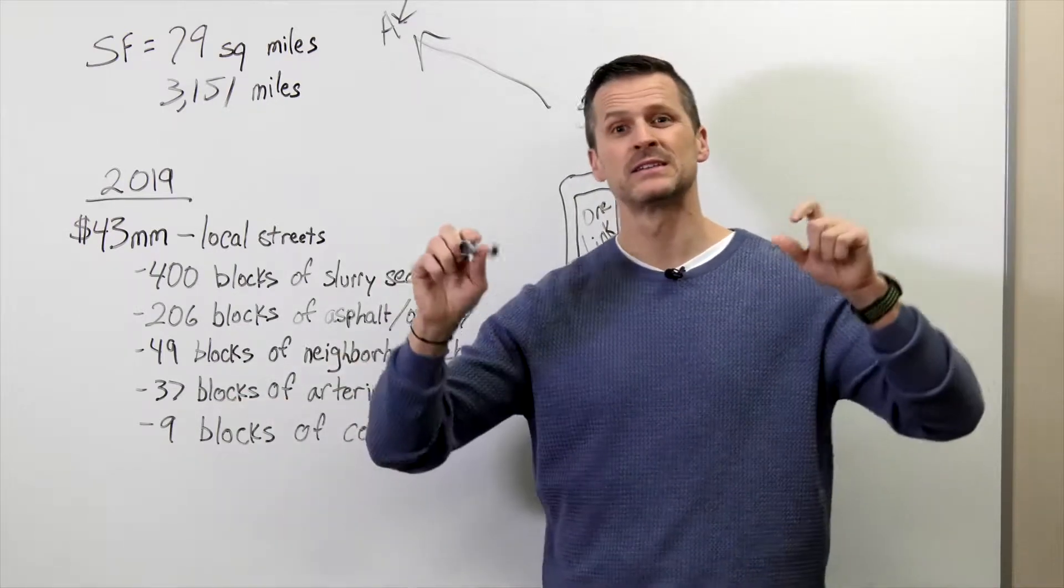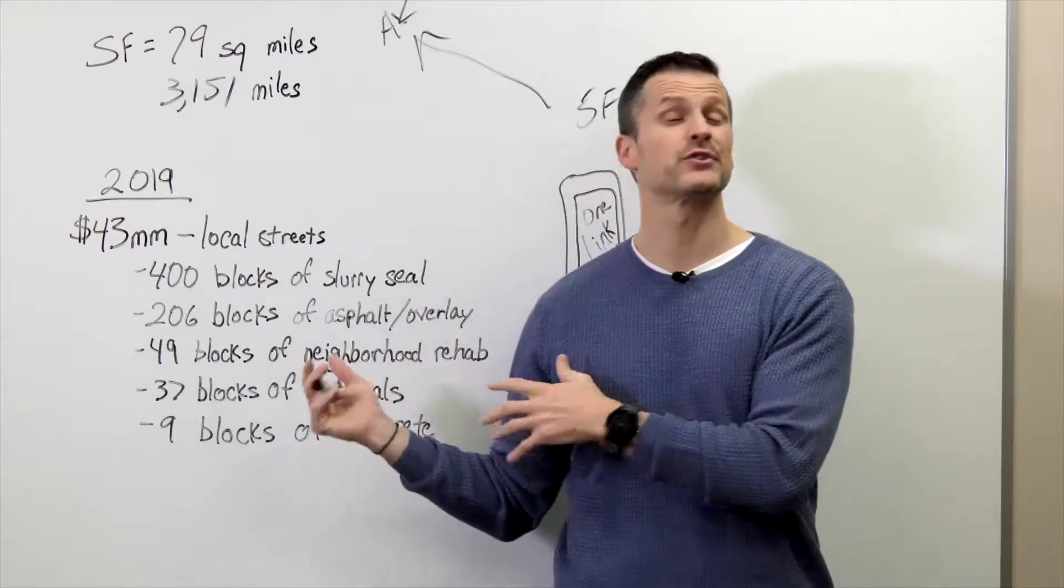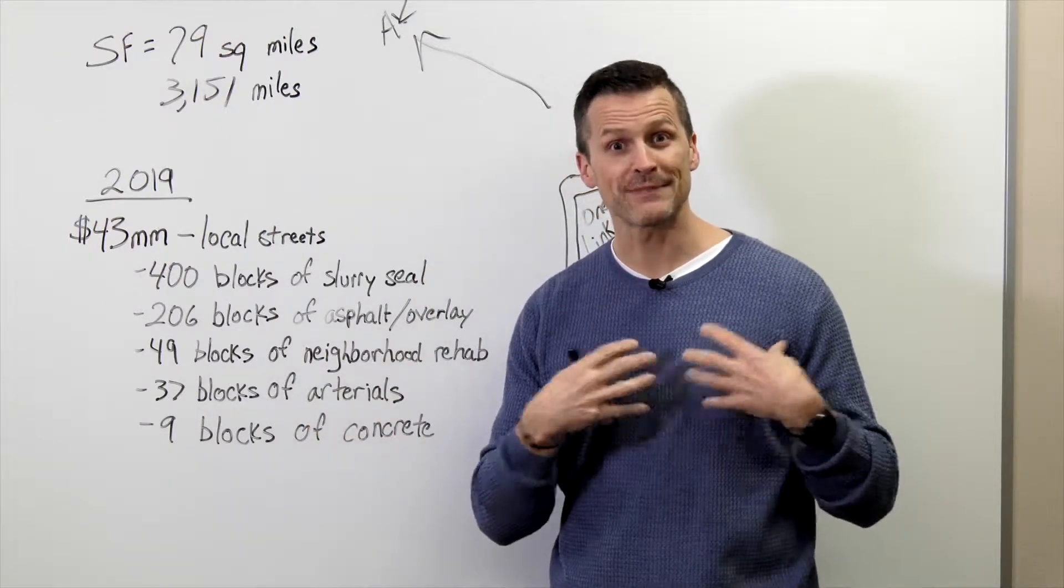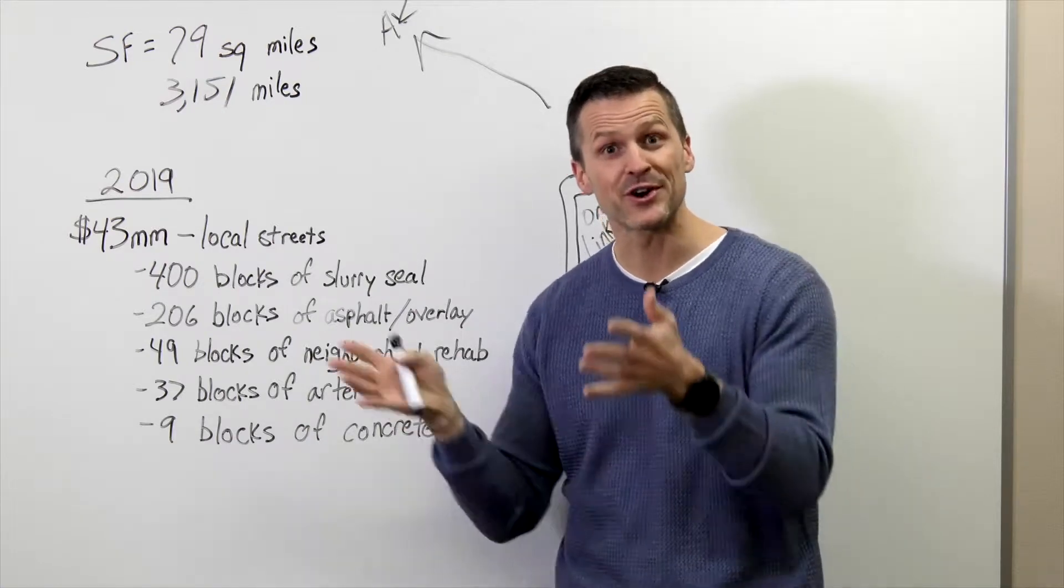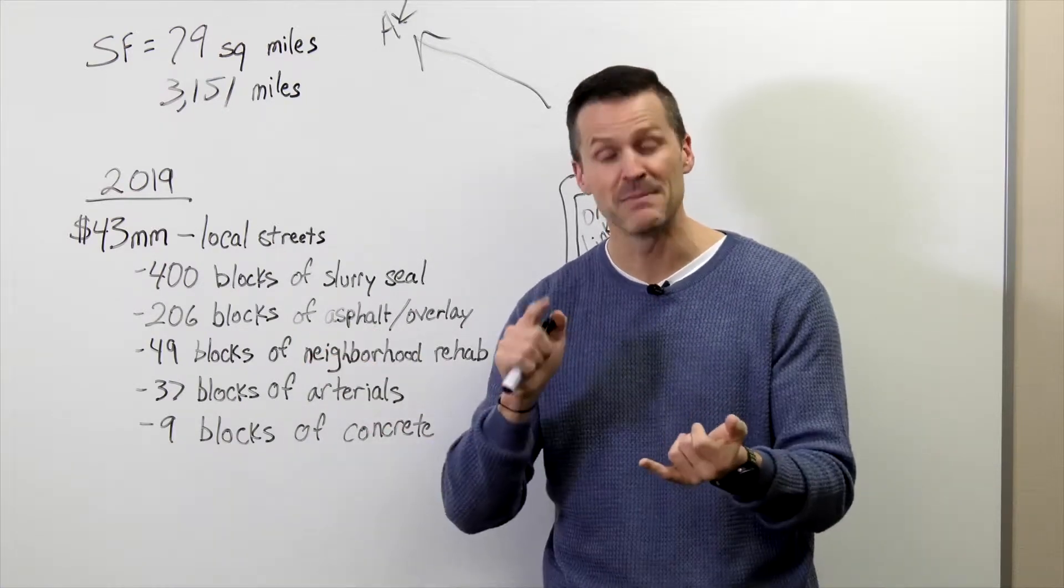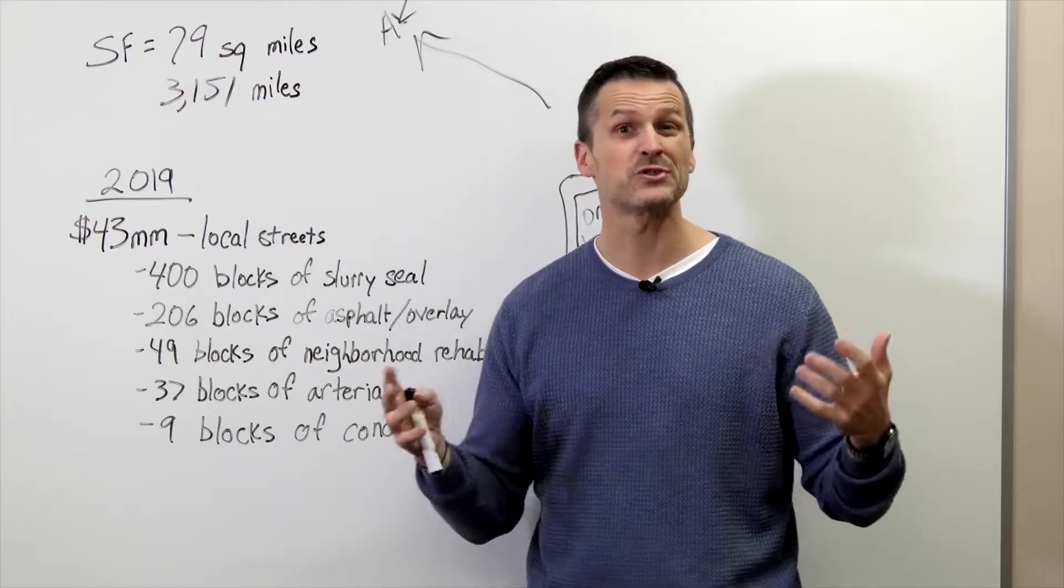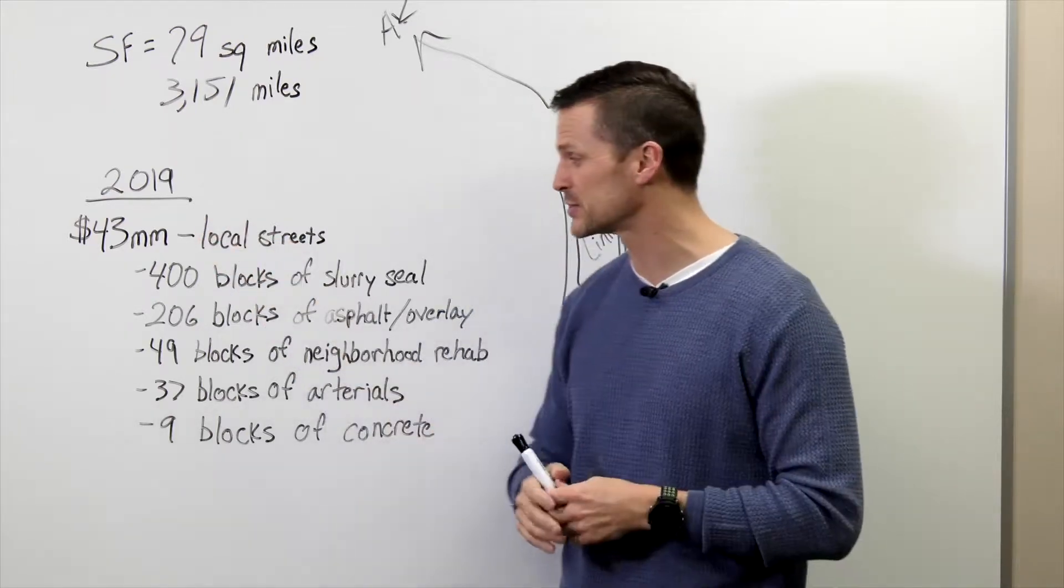37 blocks specifically of arterial street work. Arterials, if you think of your heart and arteries, very important. Your arterial streets are important to the city: Minnesota Avenue, 41st Street, Louise. Those are the arterials within our street network.